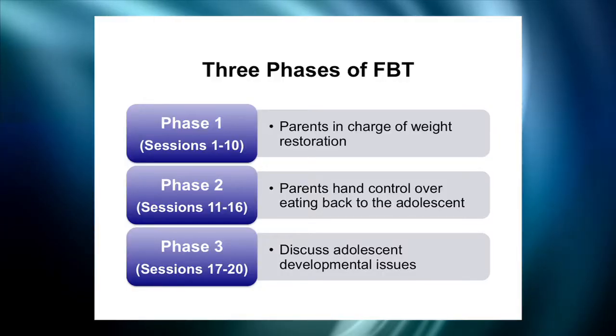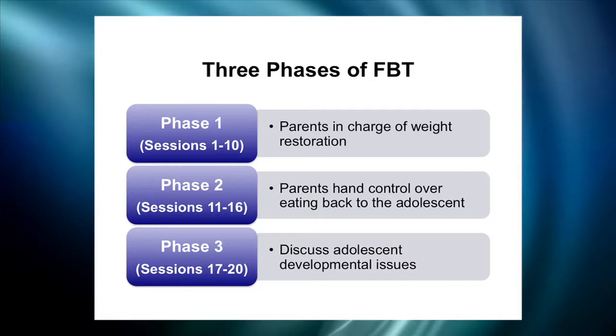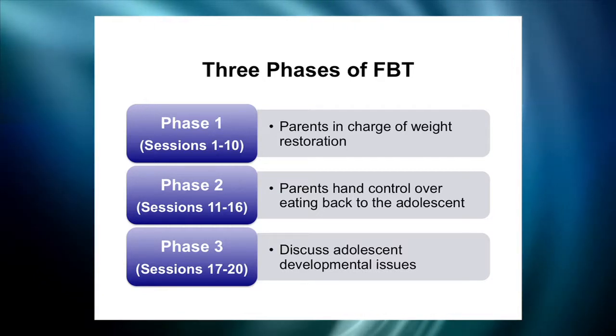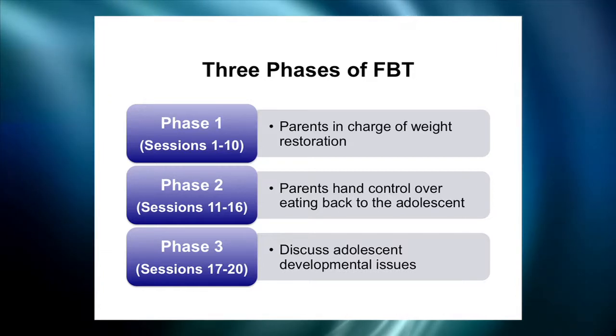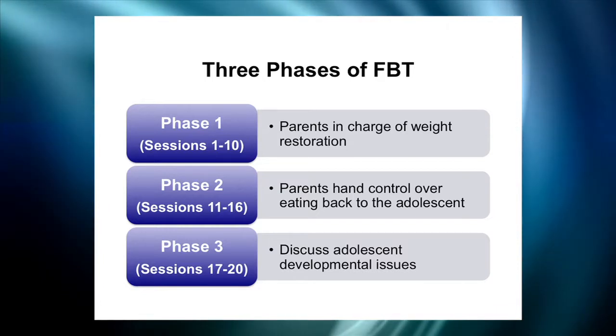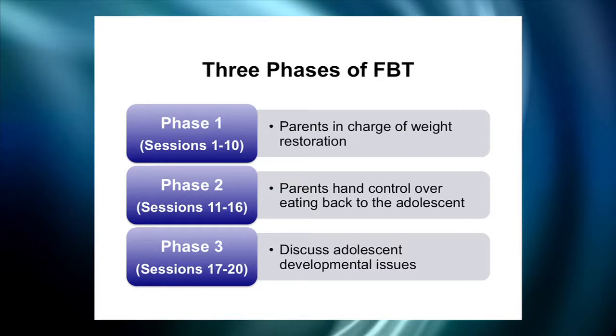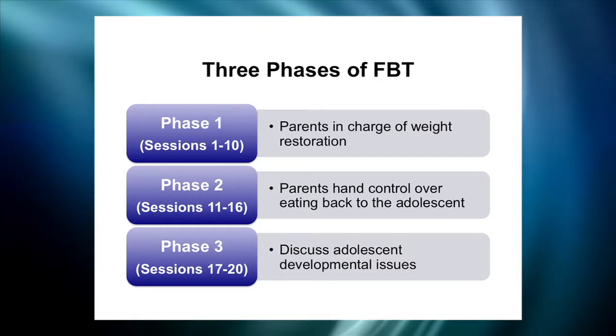FBT is always divided into three phases. In the twenty-session treatment model, the bulk of the work in phase one is where you help the parents get a handle on how to be the primary agents of weight restoration — about fifty percent of the treatment dose. Once the weight of the adolescent has gone up from around eighty percent of expected body weight to around ninety percent, and there's a change in the mood of the family, you would be ready to move into the second phase of treatment, which is aimed at handing control of eating back to the adolescent.